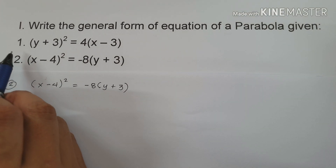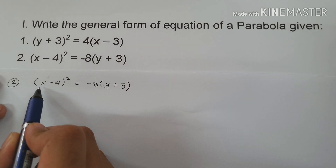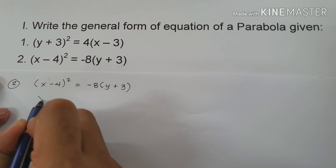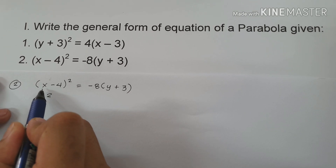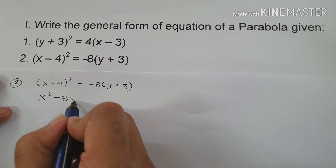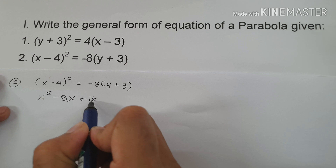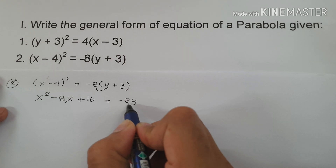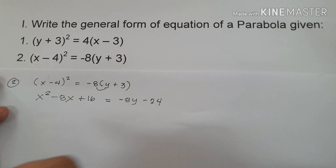Just like in example 1, we first simplify (x - 4)². We square the first term: x × x = x². Then multiply the first and second terms by 2: x × (-4) = -4x, times 2 = -8x. Lastly, (-4)² = positive 16. On the right side: -8 × y = -8y, and -8 × 3 = -24.